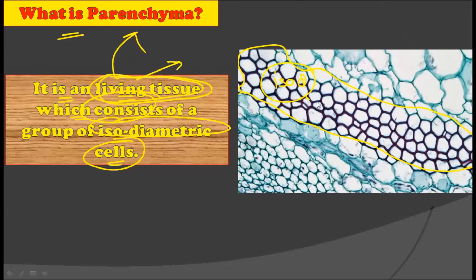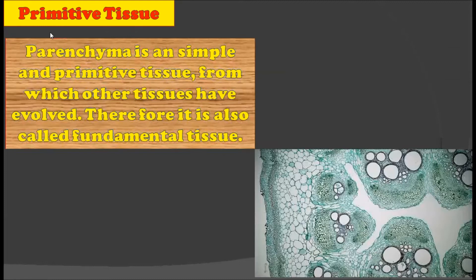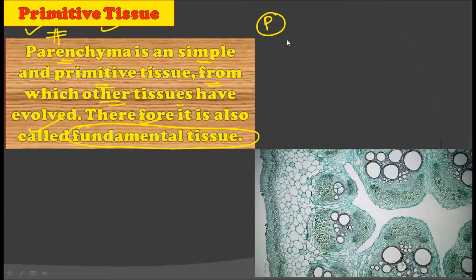These parenchyma cells are living cells and they are made up of isodiametric cells, meaning all cells have nearly the same size and shape. The very particular thing about parenchyma tissue is that it is the primitive tissue — a simple and primitive tissue from which other tissues have evolved, and therefore it is called the fundamental tissue. Parenchymatous tissues are the primitive tissue.